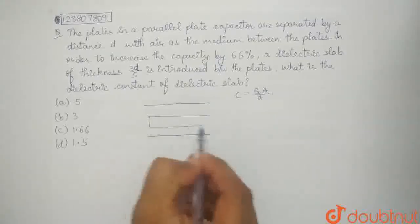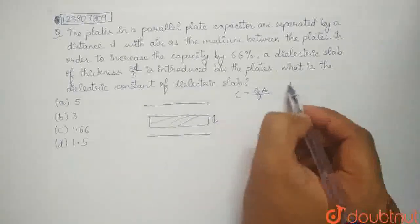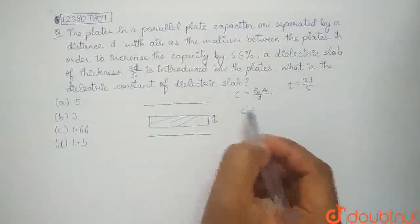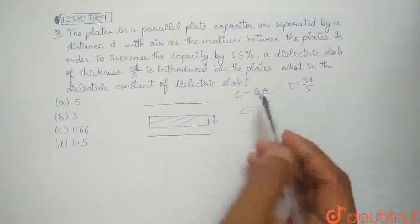Now, what did we do? We added a dielectric slab with a thickness t, where t equals 3d by 5. And we have a new capacitance c dash which is 66% more than the initial capacitance.